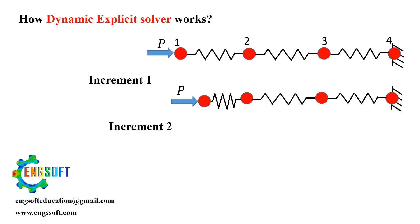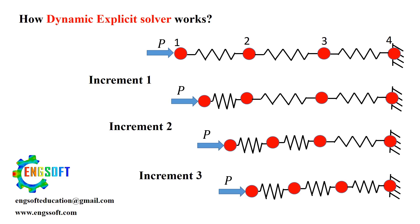With each increment, more elements get involved, and we see the stress wave propagate through the structure. This is why the explicit method is ideal for high-speed problems like impacts or explosions.